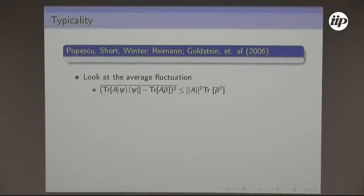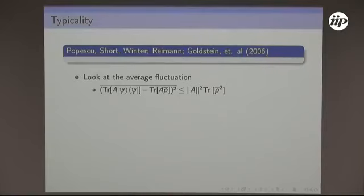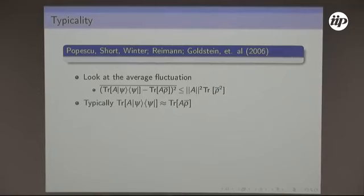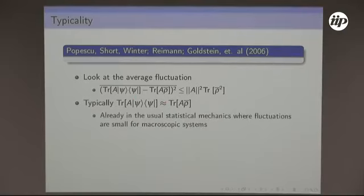To quantify the error: this is an old result. If I pick a state, measure the error, repeat many times, and compute the variance, I can give an upper bound showing this is bounded by the purity of the state, which is usually quite small — it decays exponentially with the Hilbert space dimension, double exponentially with the number of particles. So if I pick a state at random, most of the time the error I'm making is very, very small. Typically, the value of the observable is close to the ensemble average.